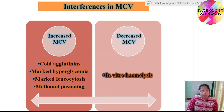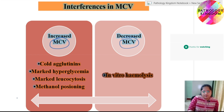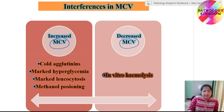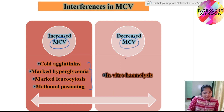Sometimes MCV can be falsely increased or decreased. Conditions causing a false increase in MCV include cold agglutinins, marked hyperglycemia, marked leukocytosis, and methanol poisoning. A falsely decreased MCV can occur due to in vitro hemolysis.